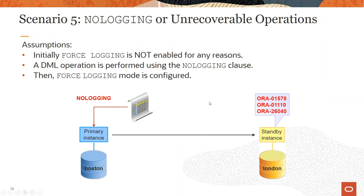Scenario 5 is no logging or unrecoverable operations. Assuming you forgot to enable force logging and then performed no-logging operations. Right after, you realized the mistake and enabled force logging. Since you made DML changes before enabling force logging, those no-logging changes were missed. As a result, you will receive a series of errors in the alert log files.